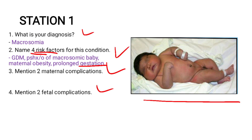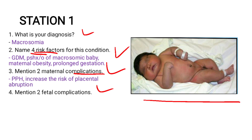Now let's go to complications. Under maternal complications, we can have PPH and increased risk of placental abruption. Remember, these are just the ones we picked out — they are not the only ones.